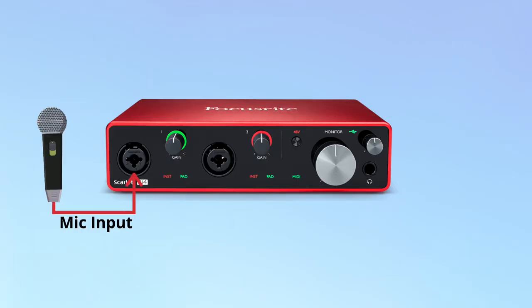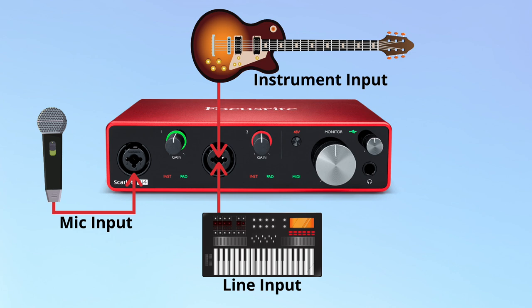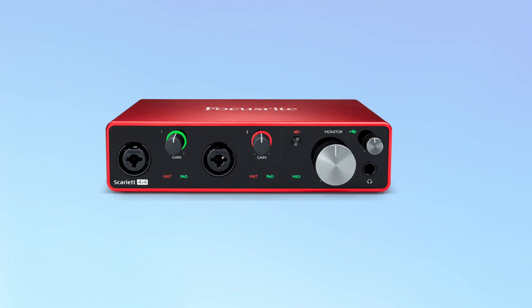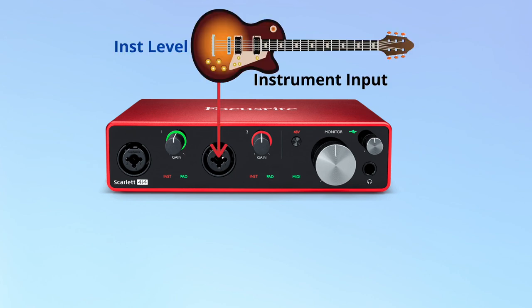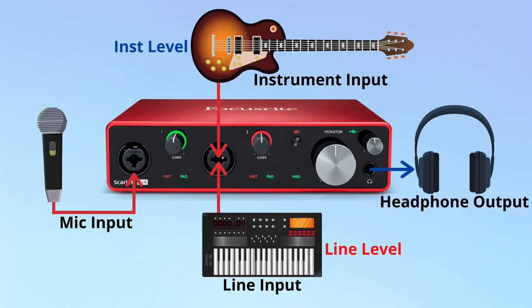First, let's look at Focusrite's 4i4 model. This is the third largest in their Scarlet series and it has a good selection of inputs and outputs. On the front we have two inputs for either a microphone or an instrument such as a guitar or a synthesizer. Instrument level inputs are designed for a low signal such as that coming from a guitar, and line level inputs expect a hotter signal which would come from a synthesizer or electric piano, for example. It's very common on the front of audio interfaces to have an input that can accept either instrument level or line level — we can choose between the two by pressing the instrument button. To the right you have an output for your headphones so you can listen to your music.